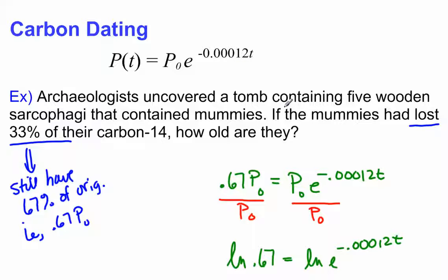So archaeologists have uncovered a tomb. They have five sarcophagi that have mummies. The mummies have lost 33% of their carbon-14.